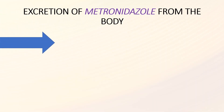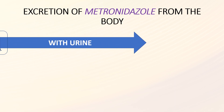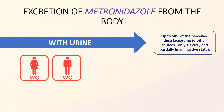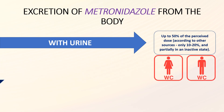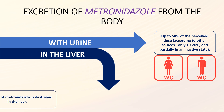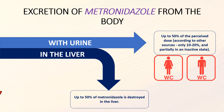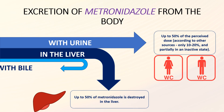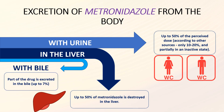Metronidazole is excreted mainly in inactive, unchanged form, but partially in inactivated states — mainly in the urine, in which up to 50% of the received dose is detected per day (according to other sources, only 10–20%). Part of the drug is detected in bile (up to 7%) and in milk. Up to half of metronidazole is destroyed in the liver.